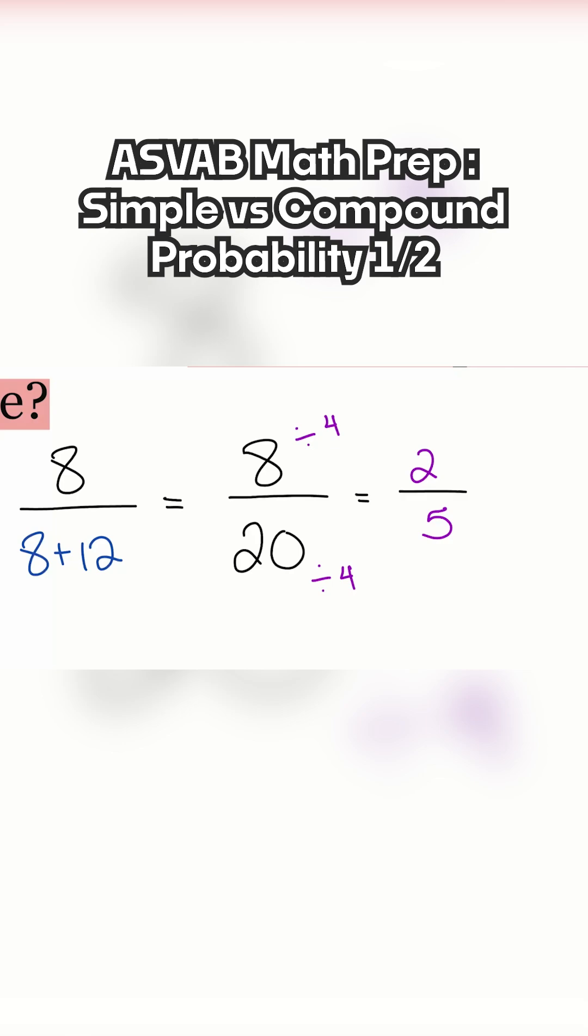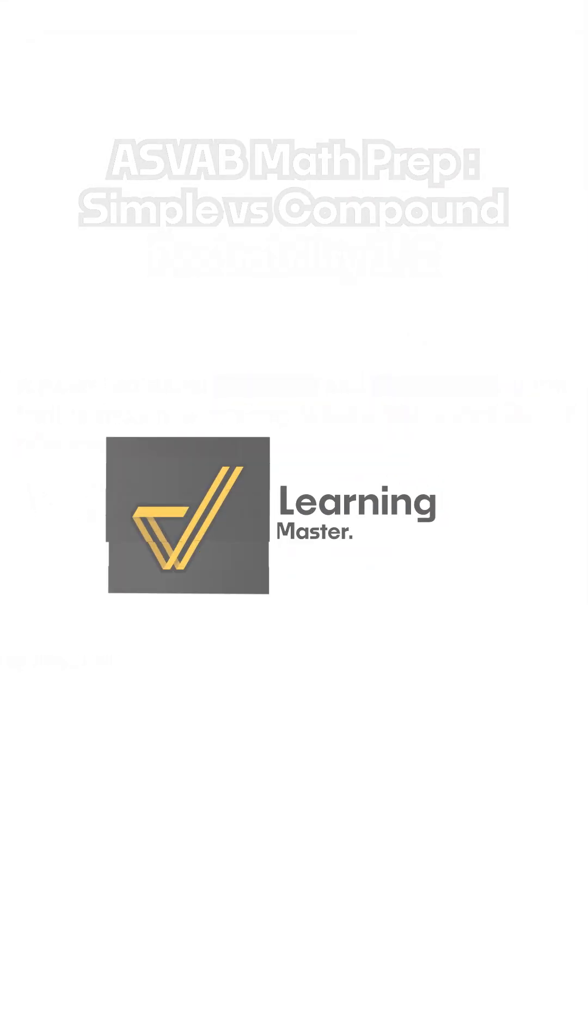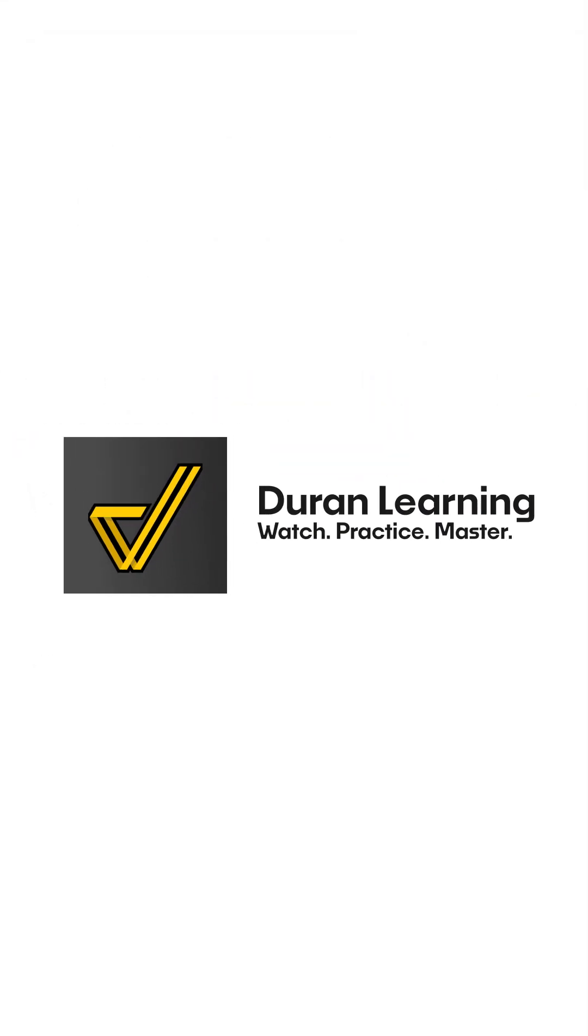And there we go. After we simplify - again, whenever we need to, whenever we can, we should be simplifying. And then once you have that simplified answer, boom, we're all done. A nice, simple probability example here.